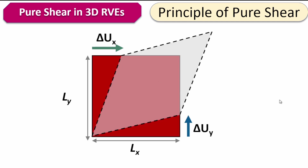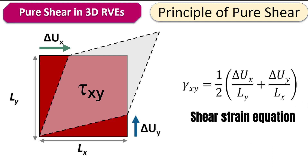The equation that describes this: the shear strain is a combination of what's happening at both points, because they combine to create the total shear in the domain. We calculate half of the deformation in the x direction divided by the length, which gives the angle at each side. Assuming those angles are small, you can calculate the shear strain.